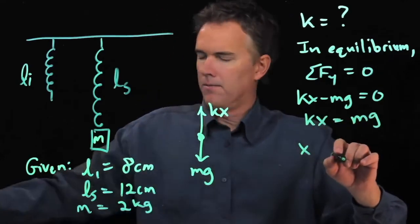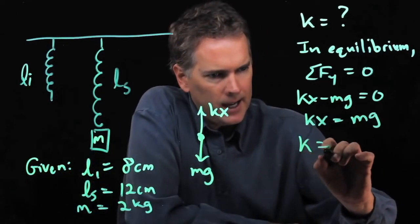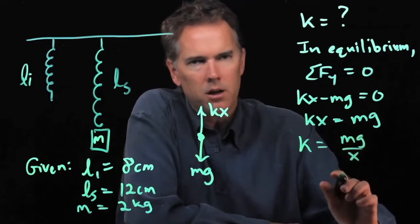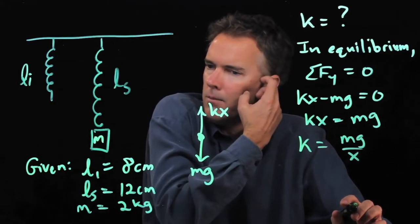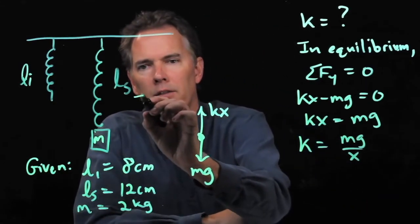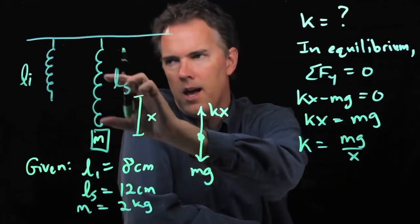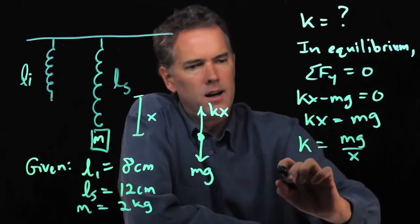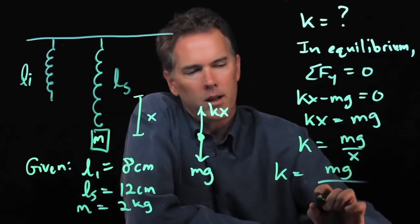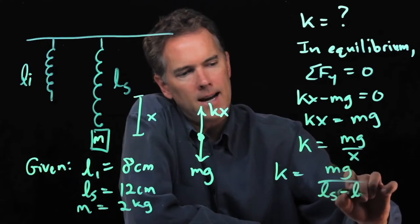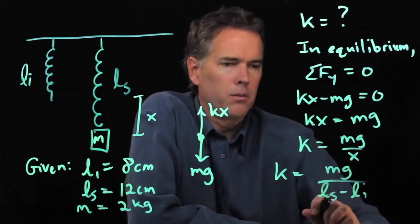kx equals mg. If I divide by x, then I get k is equal to mg over x. Alright, do we have all those numbers? Well, not quite, because x is really this distance right here. It's the difference between the stretched length and the rest length li. And so we have to be careful here. x is really l stretch minus li. And now it seems we have all those numbers.